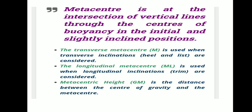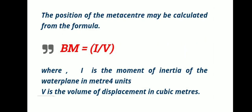Metacentric height is the distance between center of gravity and metacenter. Metacenter can be calculated using the formula I divided by V, where I equals the moment of inertia of the water plane and V equals the volume of displacement in cubic meters.